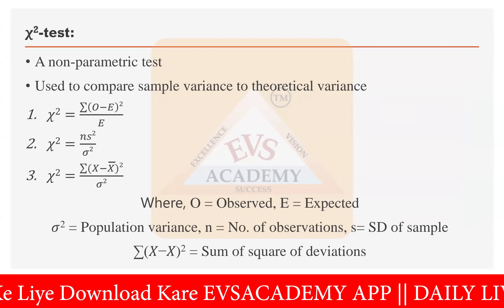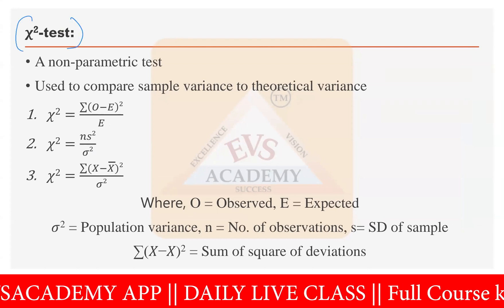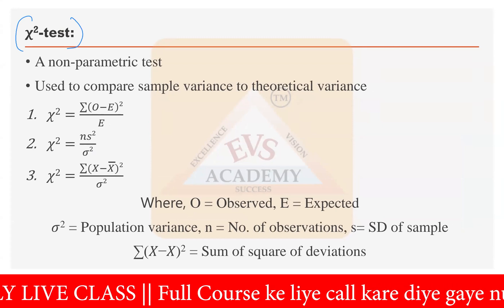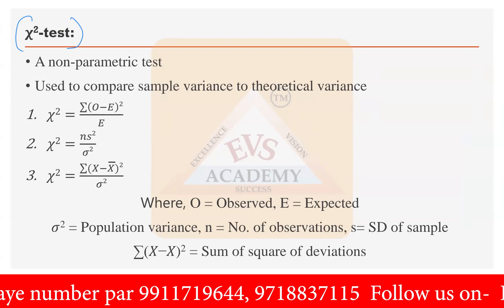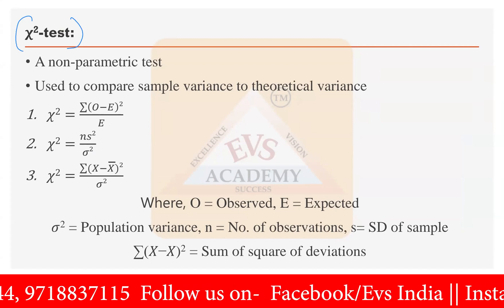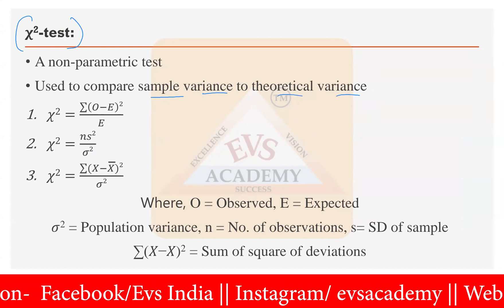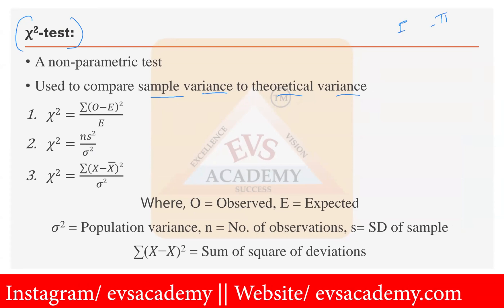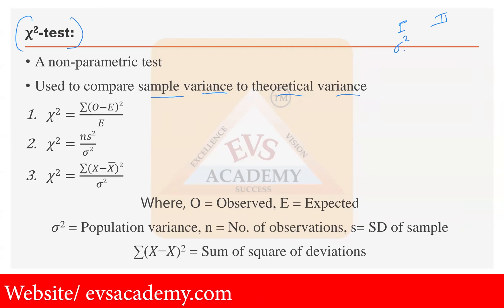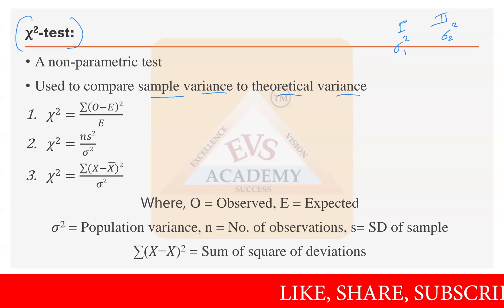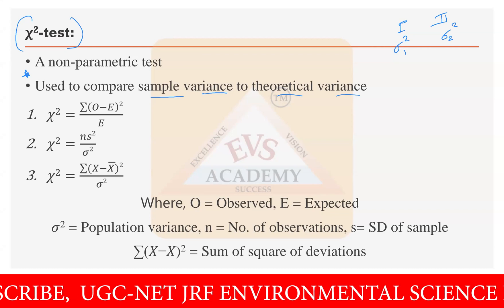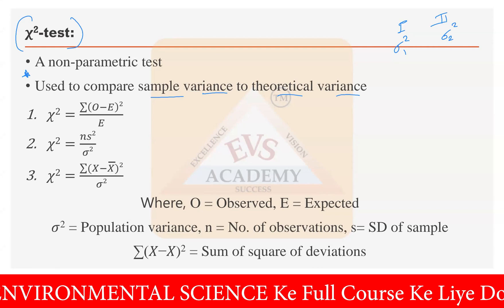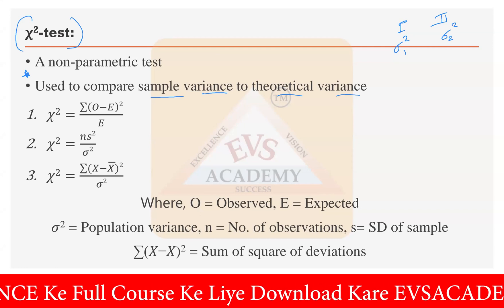After the t-test and z-test, the next test we have to study is the chi-square test. There is no requirement of making any assumption in the chi-square test, which is why it is a non-parametric test. It is used to compare sample variances to theoretical variances. With the help of the chi-square test, you can compare the variance sigma-squared of one sample with the sigma-squared of another sample. This question has already been asked in examinations — which test is used to compare two different variances? The answer is the chi-square test.